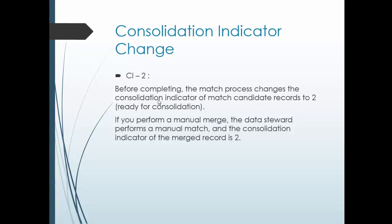This is an important point sometimes asked in interviews: when you perform a manual merge, the data steward performs a manual match. A record already in the base object has consolidation indicator 4, and there is one record present in the manual queue. The consolidation indicator of such a record is turned from 4 to 2, skipping 3. The conversion to 3 is bypassed because it is manual intervention — the data steward acts on the record and the consolidation indicator goes directly from 4 to 2.